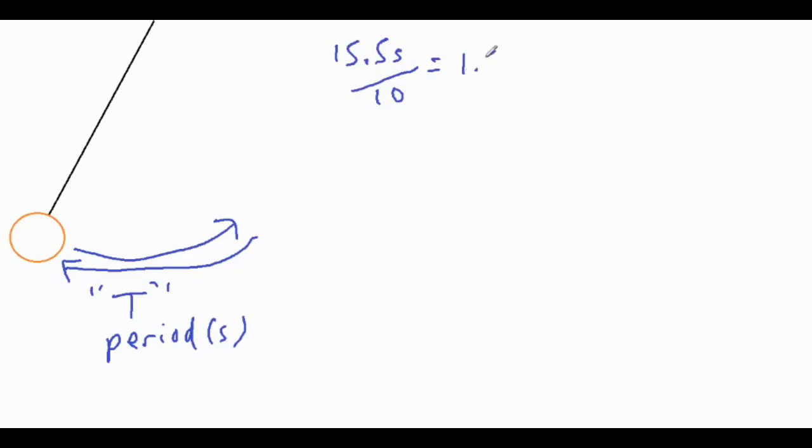So if you get something like 15.5 seconds, you can divide it by that 10 swings and then your single period is going to be 1.55 seconds on average for those 10 swings. If you want to be really accurate, you can do this a bunch of different times and average those numbers.